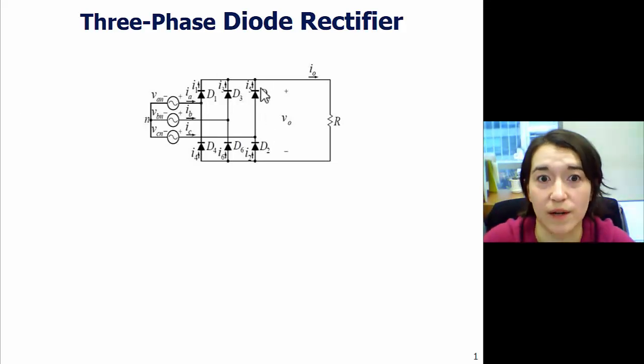These are six diodes, and for each phase, we have A, B, and C here. They are connected to one diode that points out to the load. Here, R is our load, and one comes back around and points to each of the phases. So, there's six in total, three pairs.